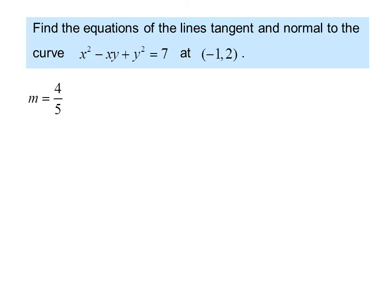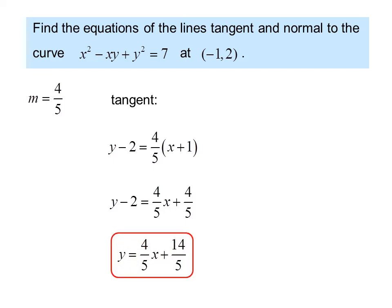Now that we have the slope, we already have the point. So for the tangent, we can use the point slope equation. And we get y minus 2 equals 4 fifths times x plus 1, or y minus 2 equals 4 fifths x plus 4 fifths, or finally y equals 4 fifths x plus 14 fifths.